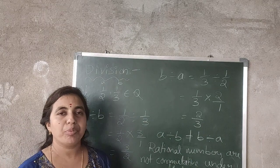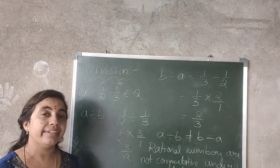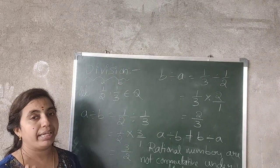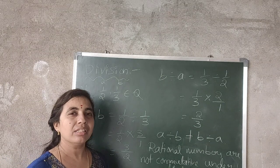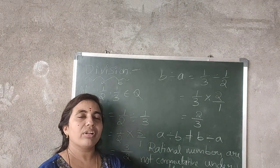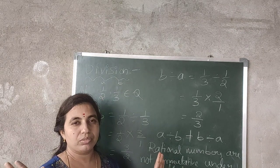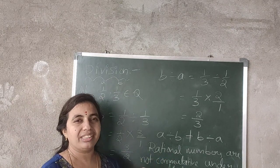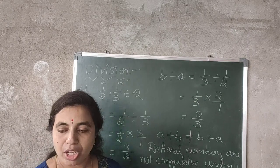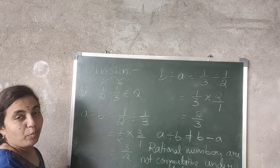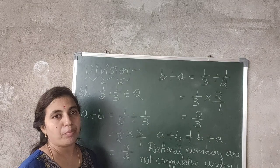So, what did we observe? Rational numbers follow commutative property only under addition and multiplication, not for subtraction and division. We can change the order of numbers under addition and multiplication only, but not in subtraction and division.